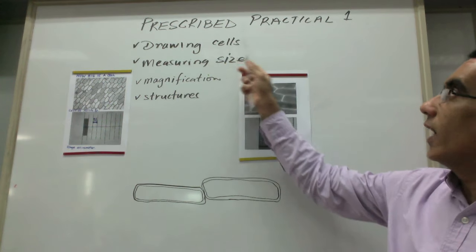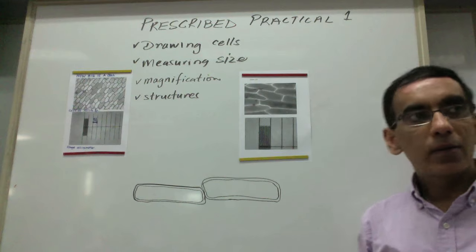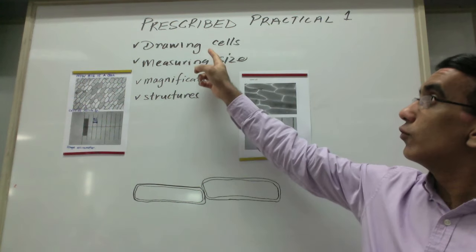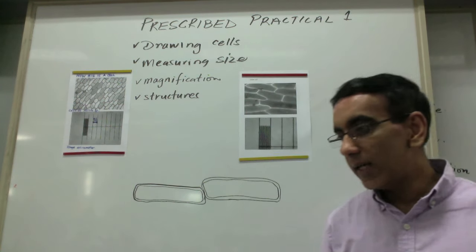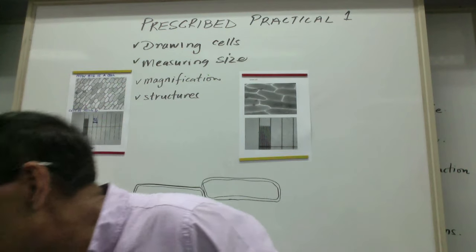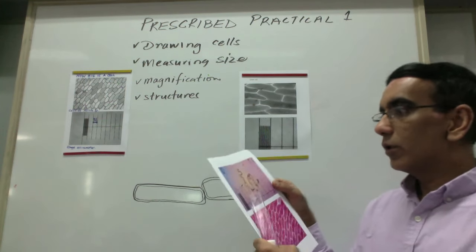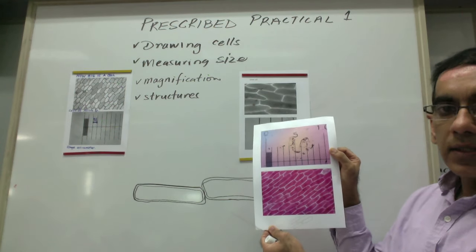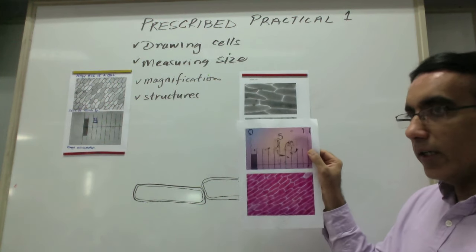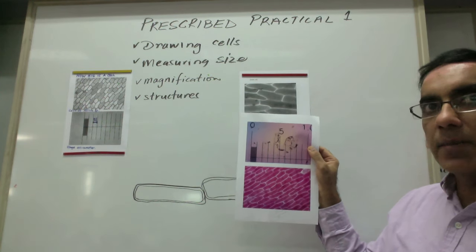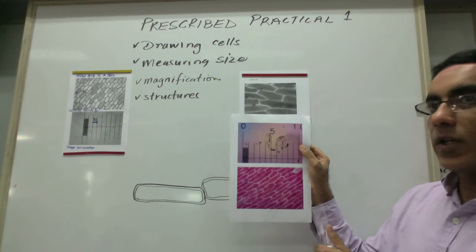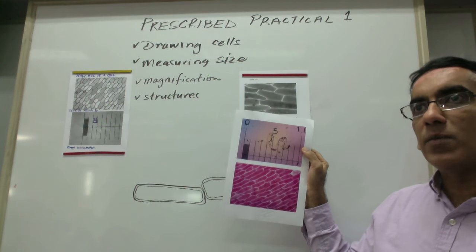Now on prescribed practical 1, which requires us to draw cells. Last time we used the light microscope to draw these cells of the onion Allium cepa, and we took some pictures of it at the times 4 objective and the times 10 objective.